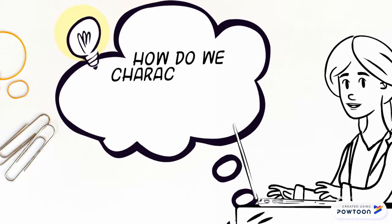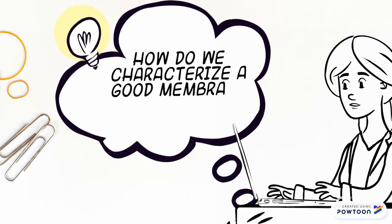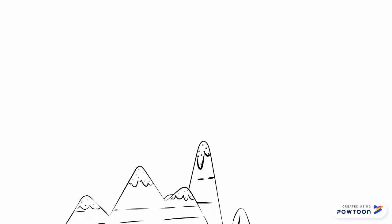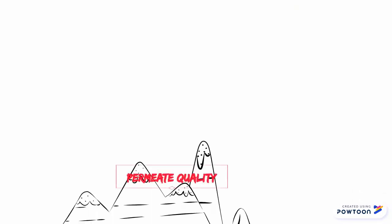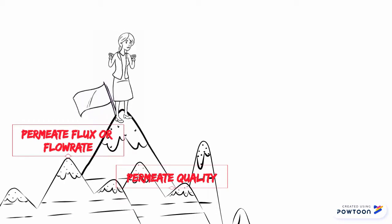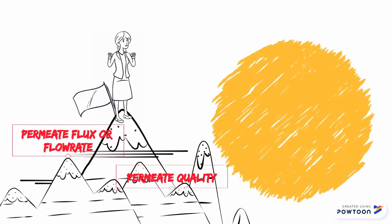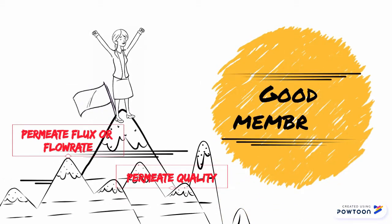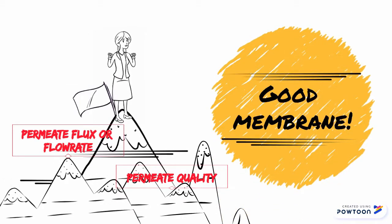How do we characterize a good membrane separation process? In most membrane separation processes, a general thumb rule is used to indicate the effectiveness of the process. The thumb rule classifies membrane process performance through the permeate quality and the permeate flux.